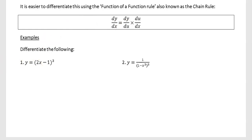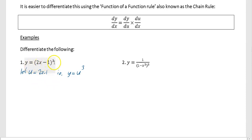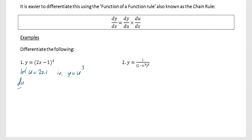So in this first question, differentiate y equals 2x minus 1 to the power of 3. I'm going to say let u equal 2x minus 1. That means y equals u cubed. Your u is pretty much always going to be the thing that's in the bracket. We need to find dy by du and du by dx. So du by dx: u equals 2x minus 1, differentiate to get 2.